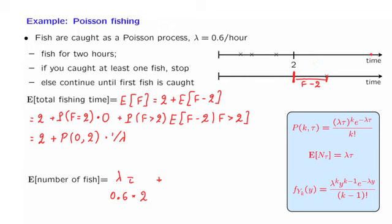Again using the total expectation theorem, there's one scenario under which you do not catch any fish after time two, contributing nothing. Then there is the second scenario — occurring with the probability of catching no fish during the first two hours — under which you will catch exactly one fish with certainty.